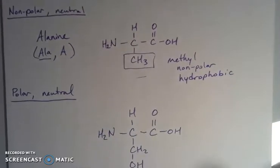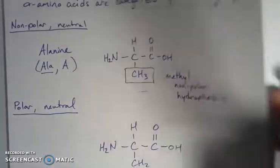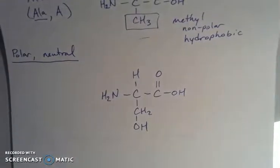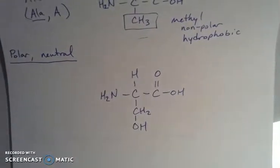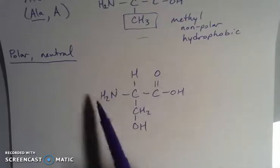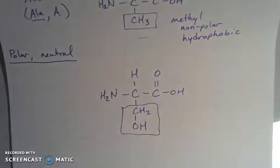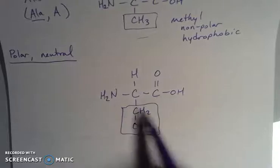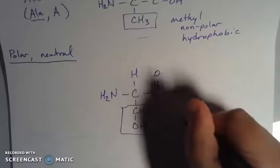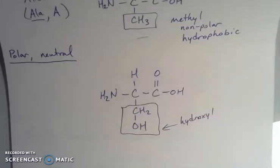Now you can also have an amino acid that has a polar R group. So an example of this, first thing is we identify our alpha carbon. So this guy in the middle. We see that we have our hydrogen, our amine and our carboxylic acid. So my R group here is a carbon with a couple of hydrogens.